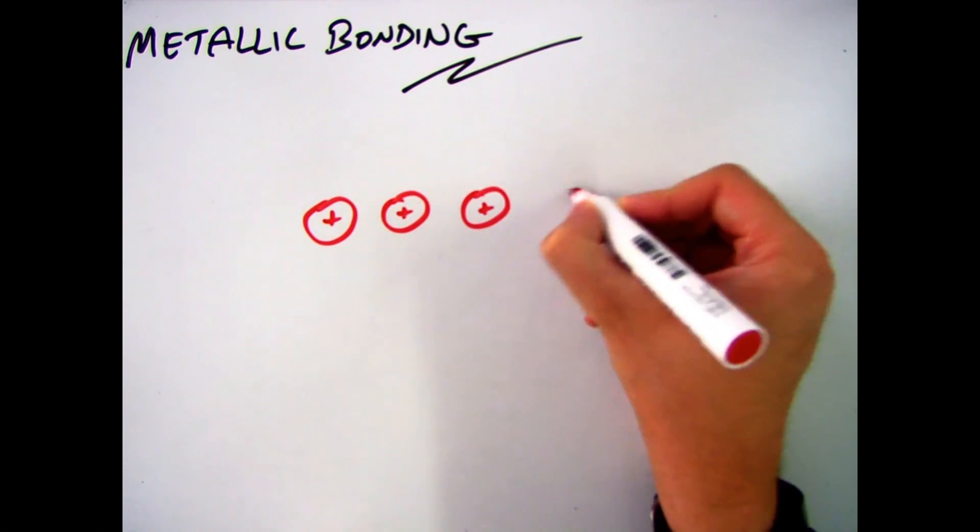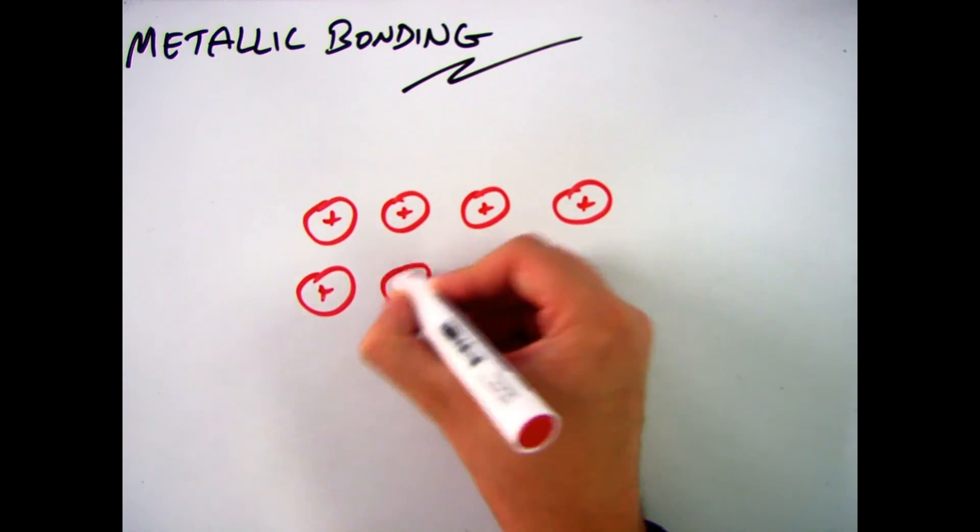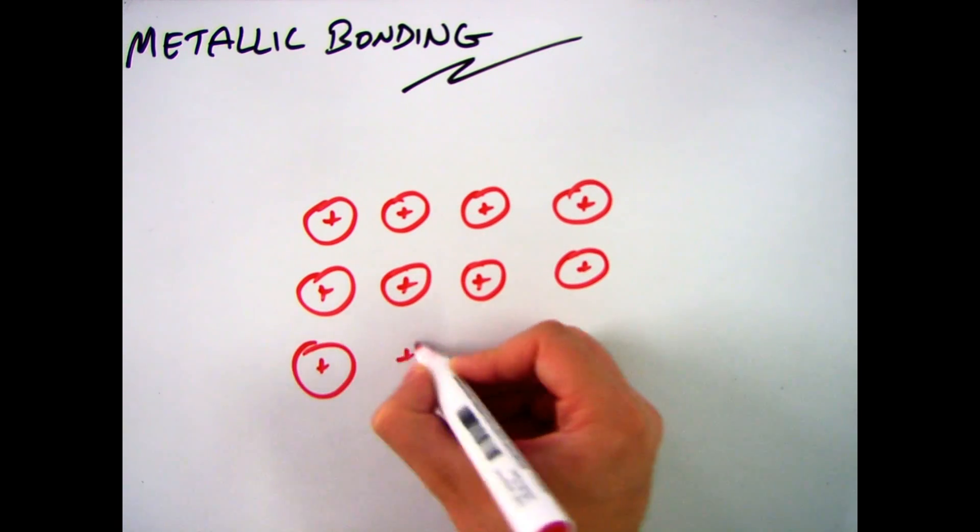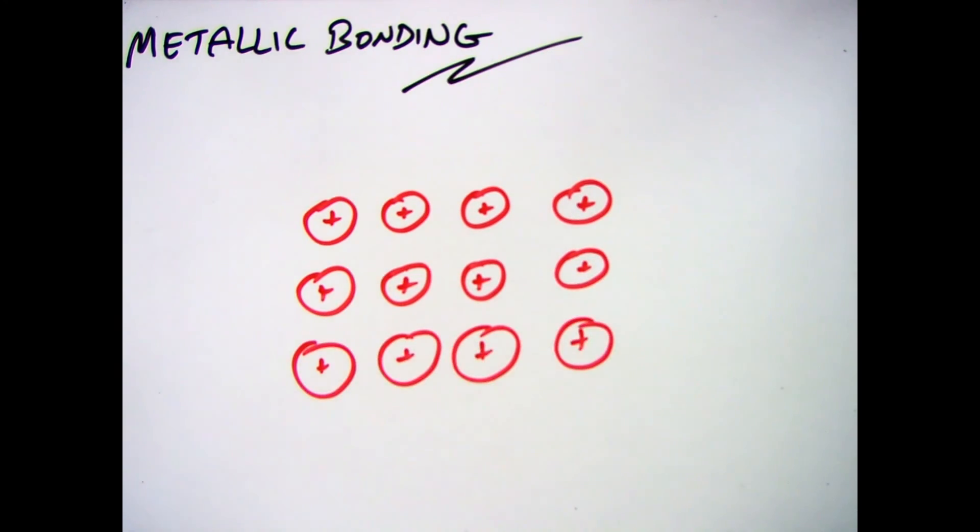Now the two main properties you need to be able to explain are why they can conduct electricity and why they are malleable. And in order to do that you need to know a little bit about metallic bonding.